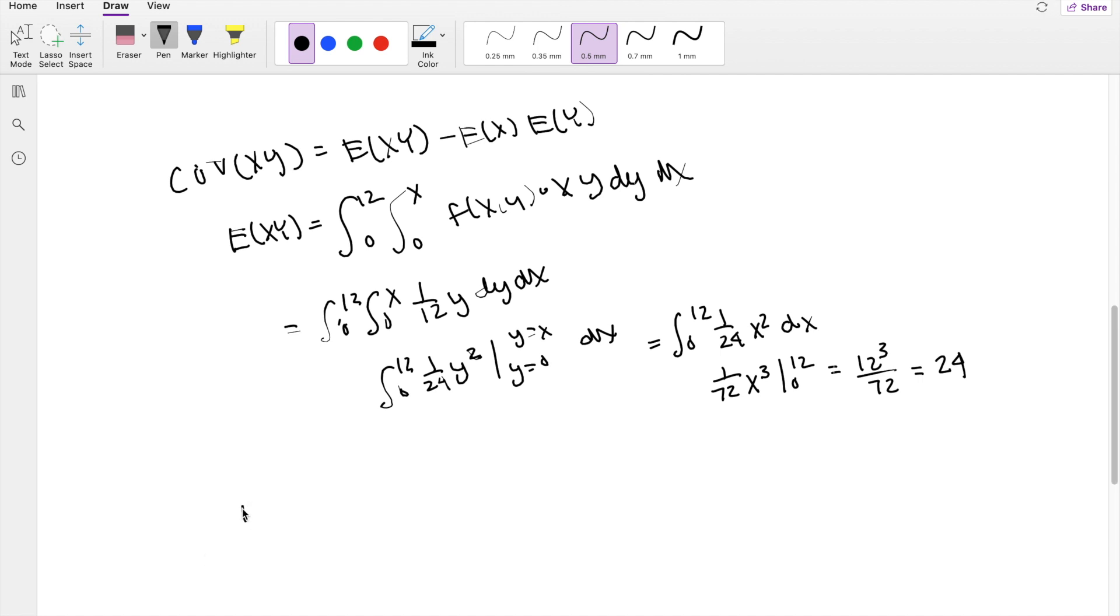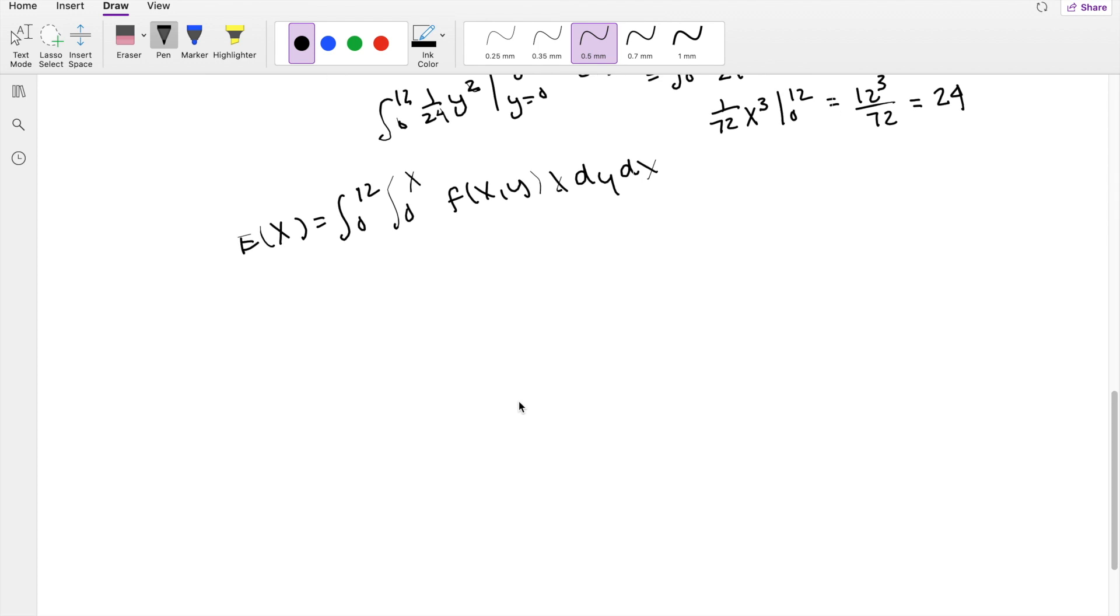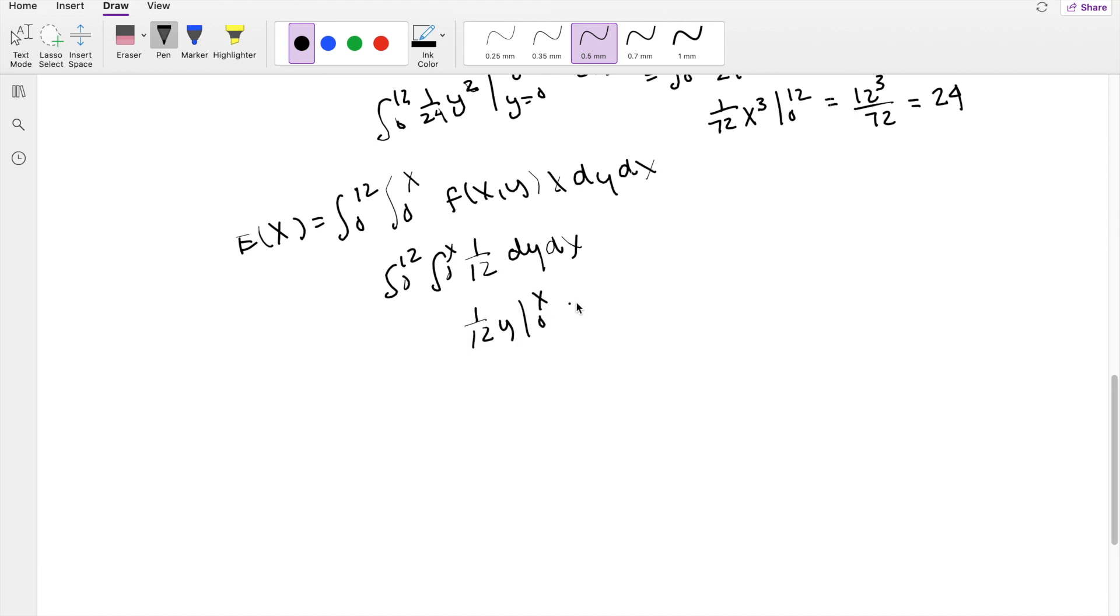Alright, moving on, the expectation of X is just equal to the same range here, and it's just f of X comma Y times x dy dx. So then if f of X comma Y is equal to 1 over 12x, the x's cancel out, so you're just left with 1 over 12 dy dx. So then if you're integrating with respect to y first, there is no y, so it's just going to be 1 over 12 times y integrating from 0 to x. So then keeping the outer shell here, 0 to 12, this is equal to 1 over 12 times x dx.